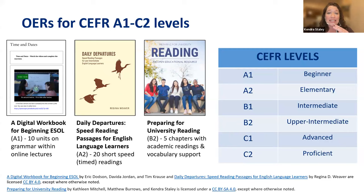The OER in the middle, Daily Departures: speed reading passages for English language learners, is at the A2 level — still beginners but a little higher than A1. In this book, there are 20 short speed or timed readings with comprehension questions. Timed readings calculate how many words per minute you can read. The goal is to increase your reading speed while maintaining comprehension. This skill is useful for preparing for standardized English language tests like the TOEFL in the US and IELTS in the UK.